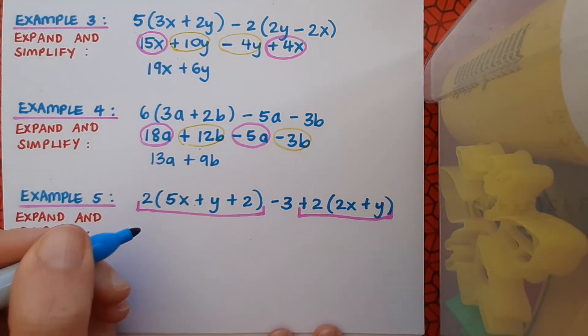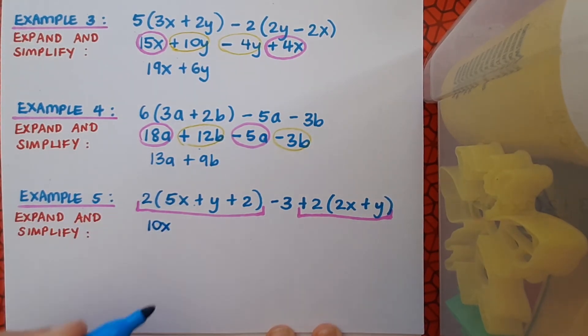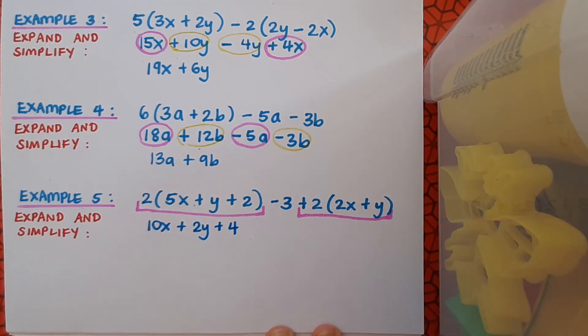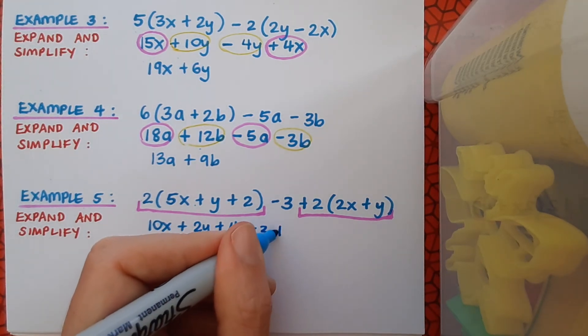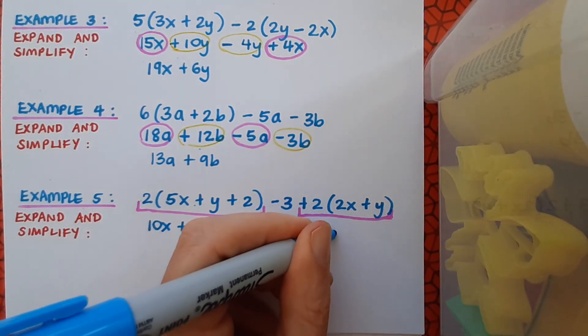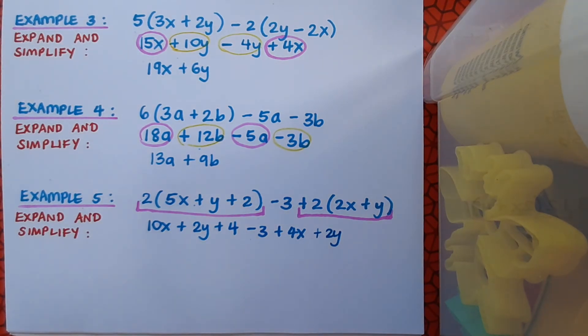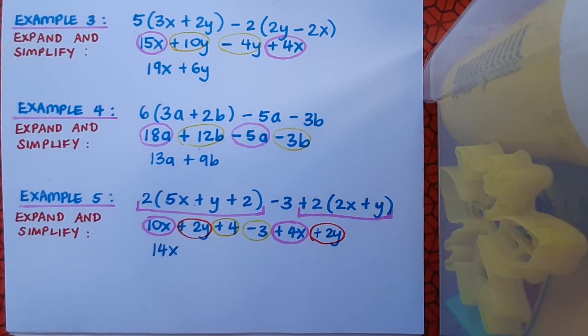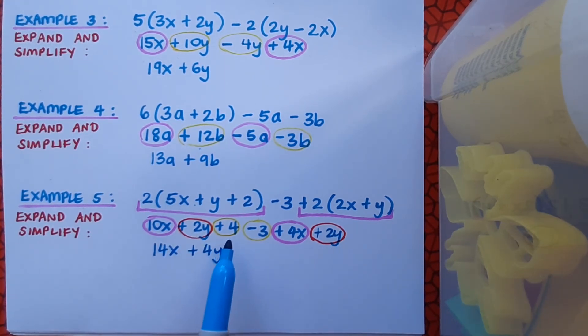When multiplying out here we're going to get 10x plus 2y plus 4, the minus 3 is going to stay there not doing anything just yet, and then 2 by 2x is going to give us plus 4x and plus 2 by plus y is going to give us plus 2y. We've done the expanding part of the instruction now and now we have to simplify. This means first of all identifying our like terms. The x's will go together, the y's will go together, and the constants will go together. 10x and 4x will make 14x, plus 2y plus 2y will make plus 4y, and plus 4 minus 3 will make plus 1.